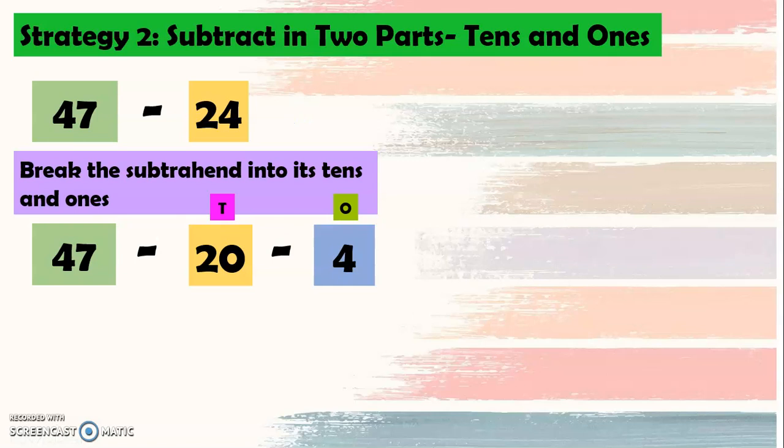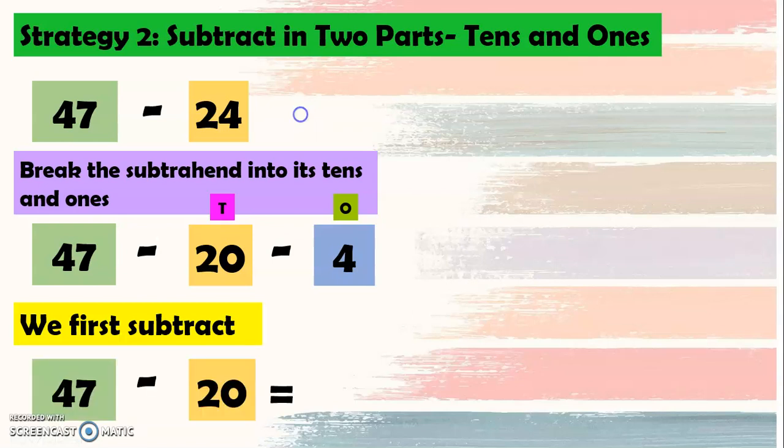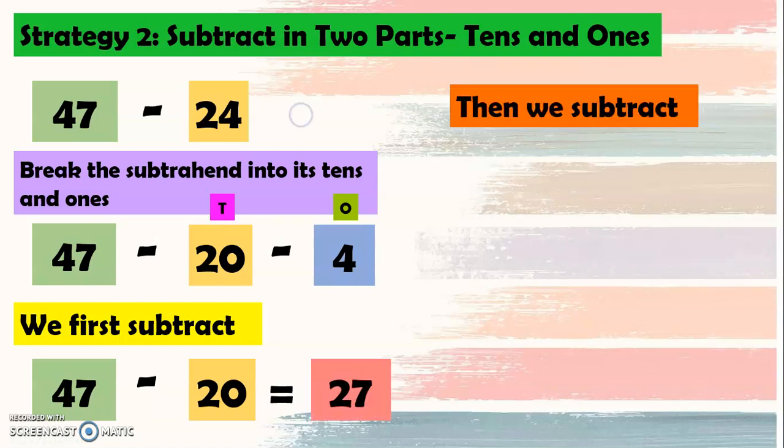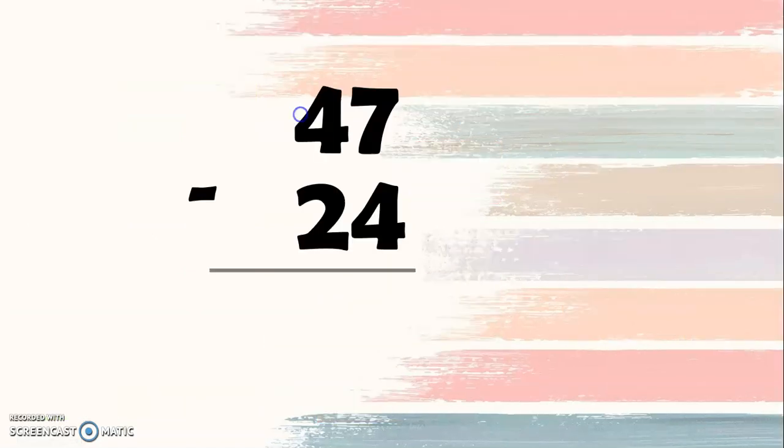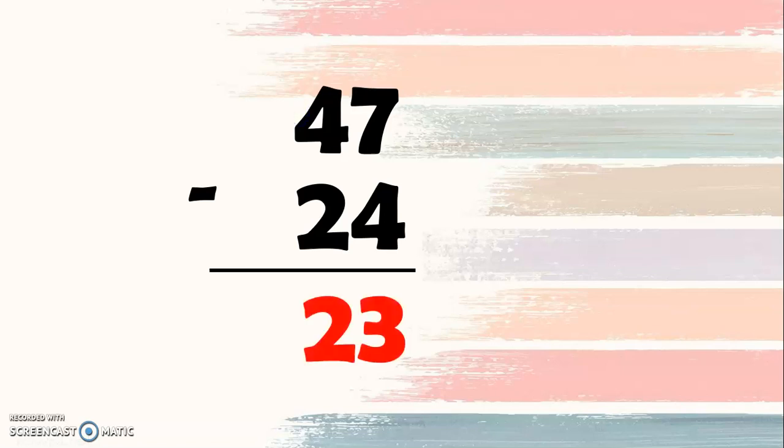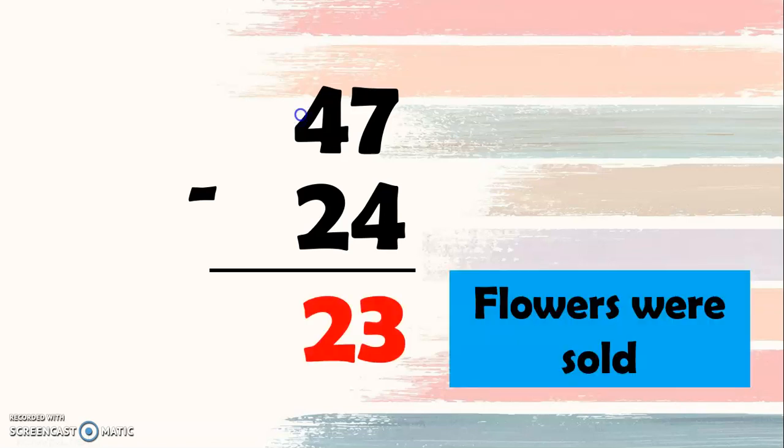So we have 47 minus 20 minus 4. And we first subtract 47 minus 20 equals 27. Then we subtract 27 minus 4 equals 23. So the difference is 47 minus 24 equals 23. So 23 flowers were sold.